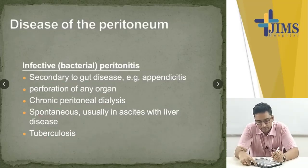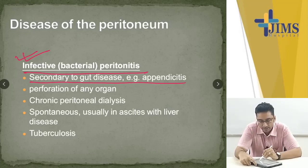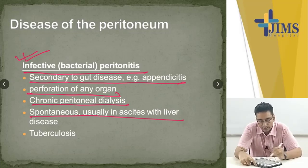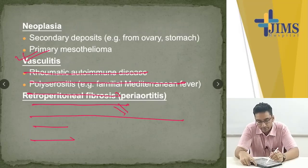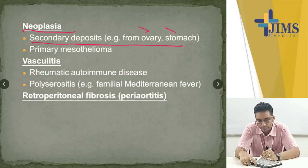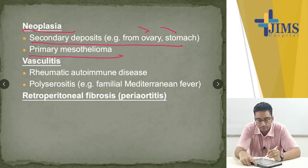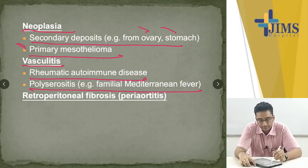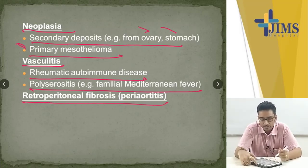Peritoneal diseases can be infective: bacterial peritonitis secondary to gut disease like appendicitis, perforation of any abdominal organ, chronic peritoneal dialysis, or spontaneous bacterial peritonitis usually in ascites with liver disease, and tuberculosis. Can be neoplastic: secondary deposits from ovary or stomach, or primary mesothelioma — tumor of the mesothelial cells lining the peritoneum. Can also be vasculitis like rheumatic autoimmune disease, polyserositis in familial Mediterranean fever, or retroperitoneal fibrosis like periaortitis.